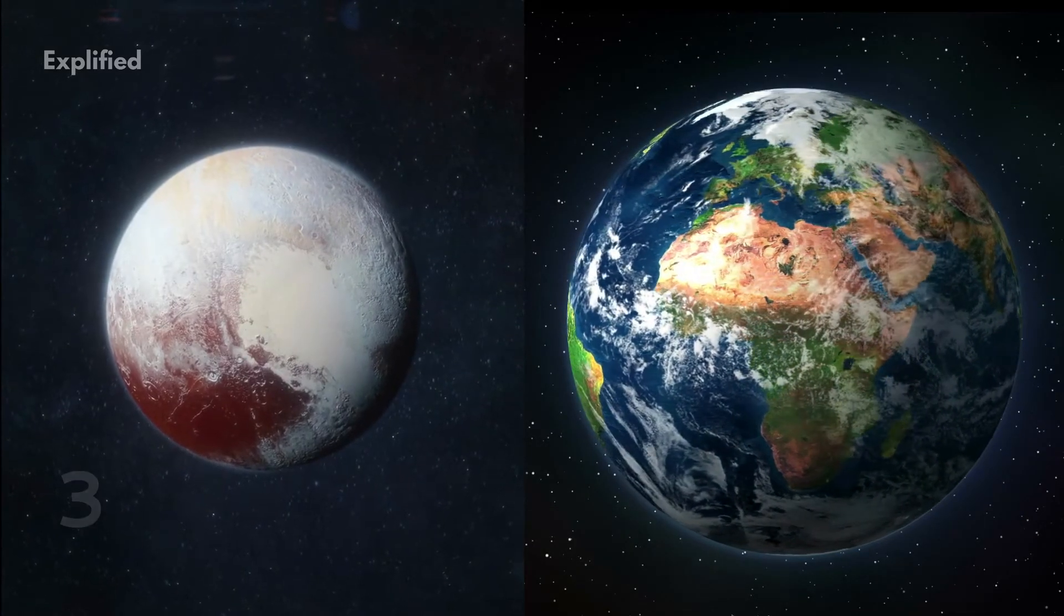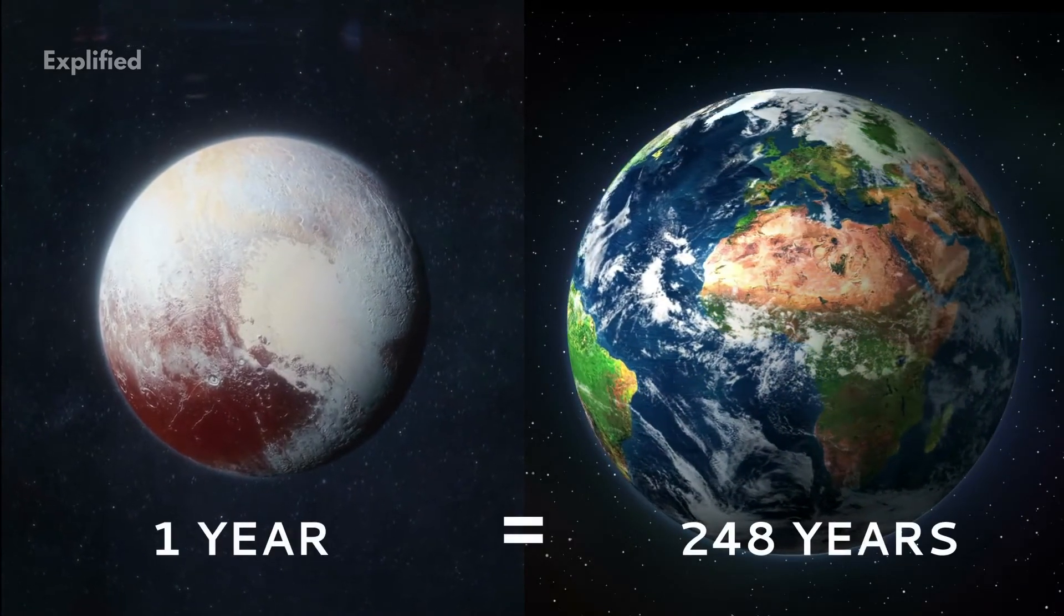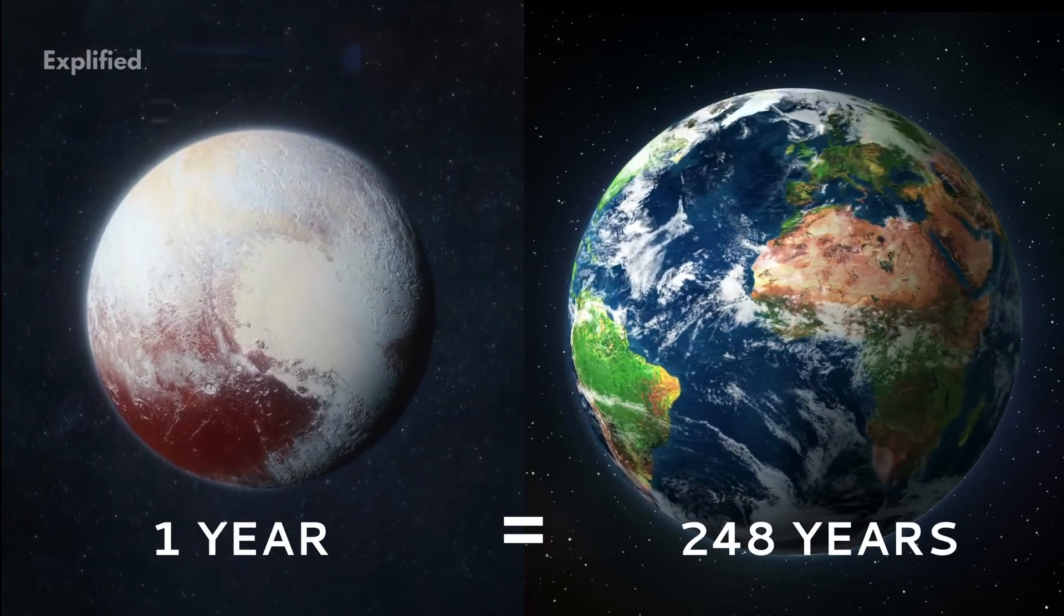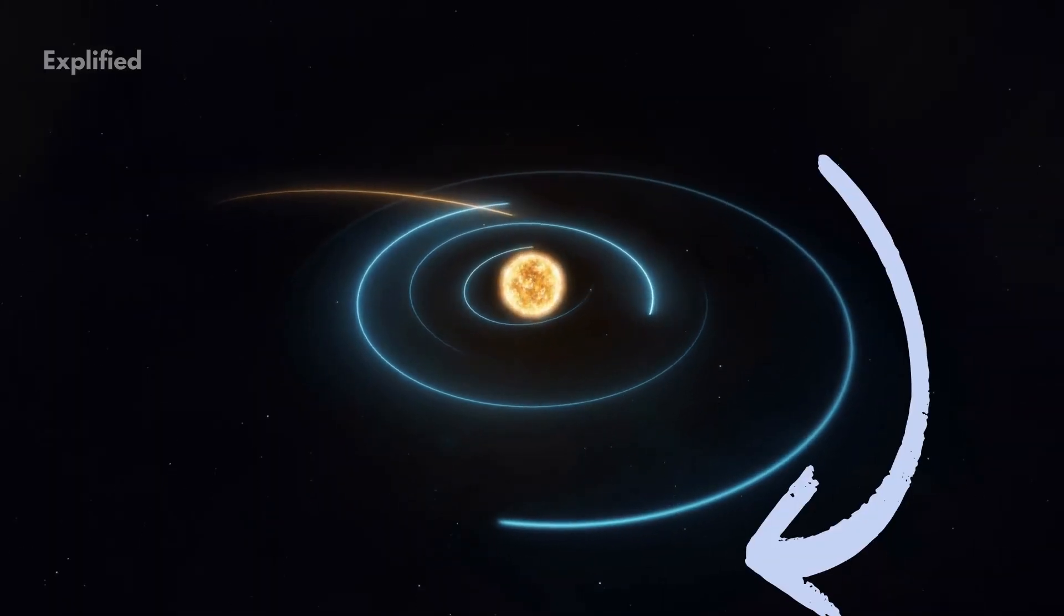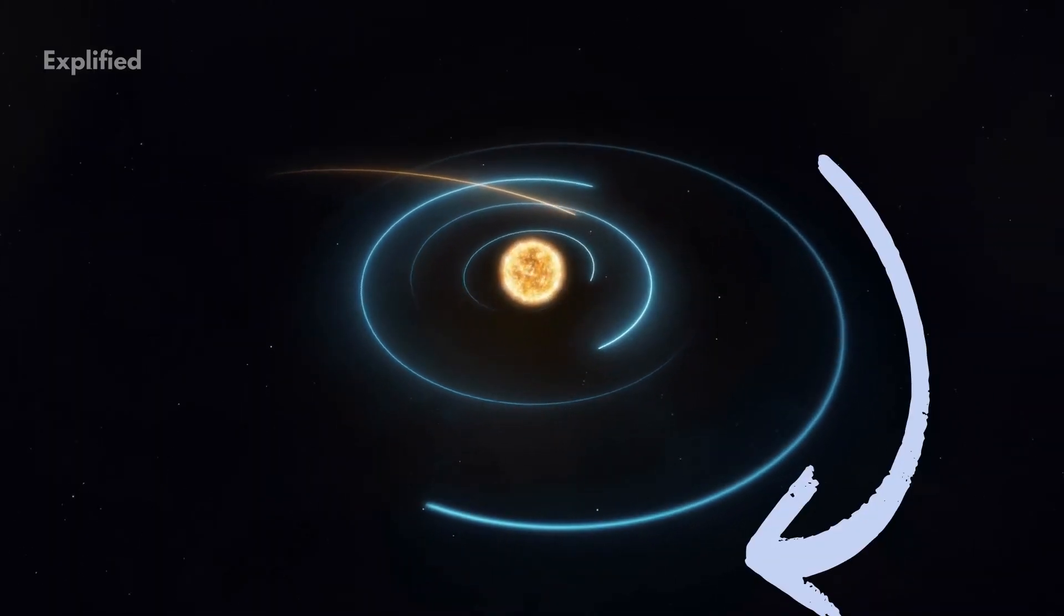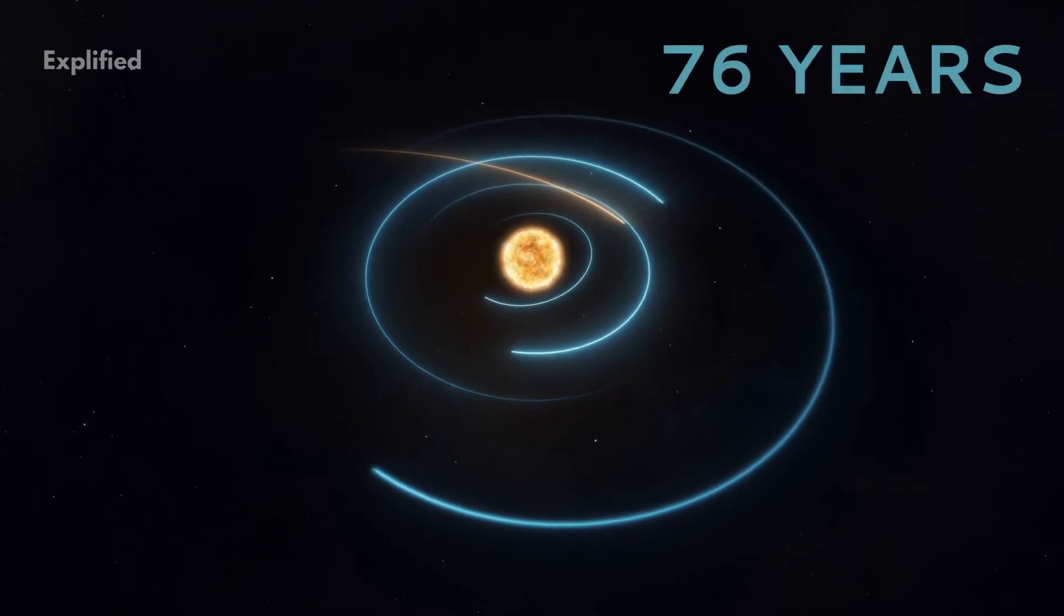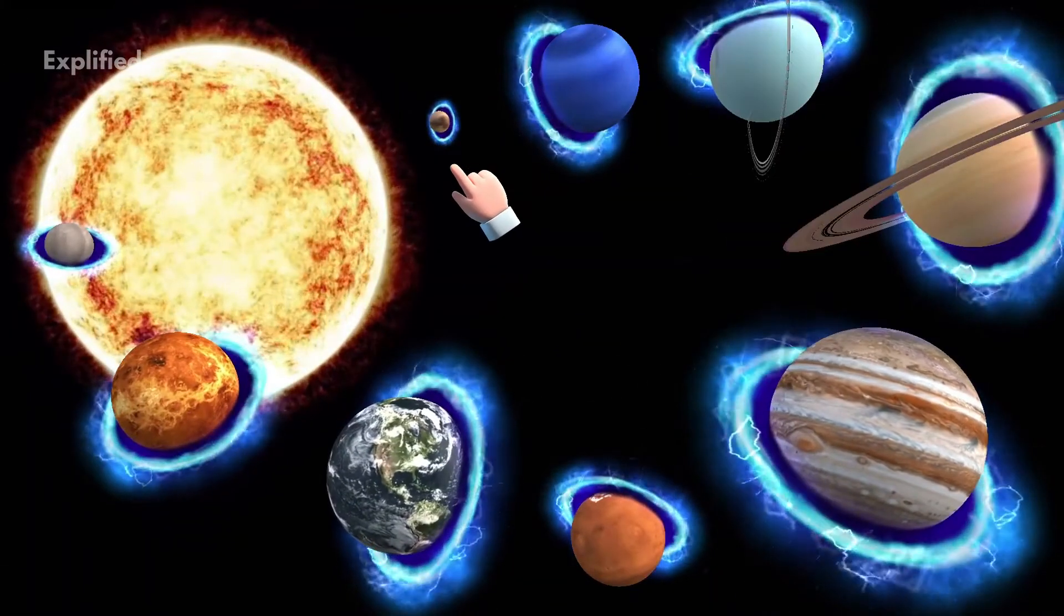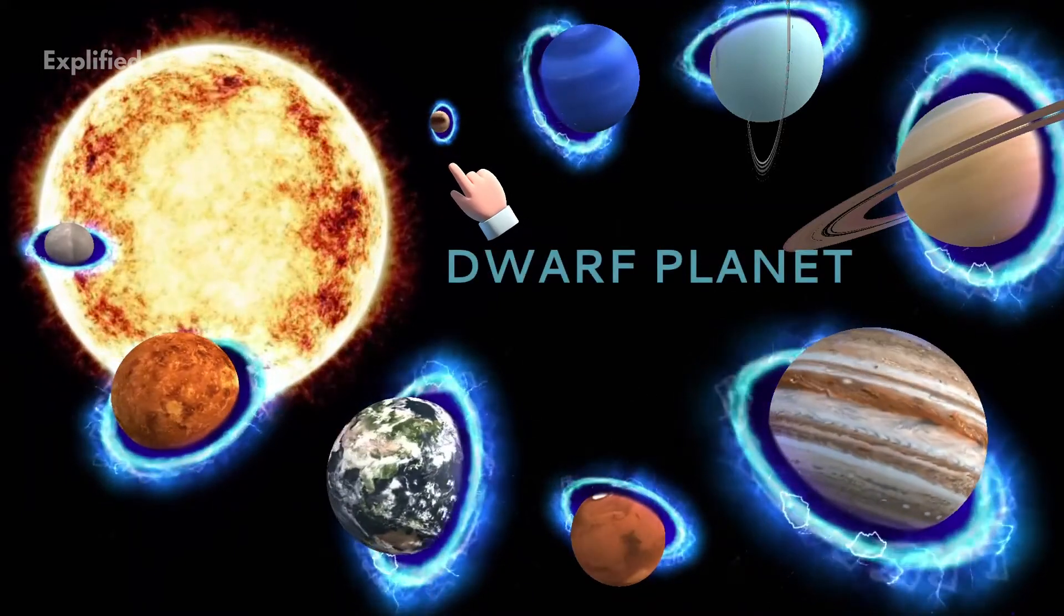Number 3. A year on Pluto is 248 years on Earth. Pluto completed under one-third of its orbit revolution around the Sun in the 76 years that passed by between its discovery and reclassification as a dwarf planet.